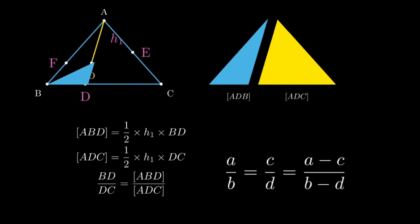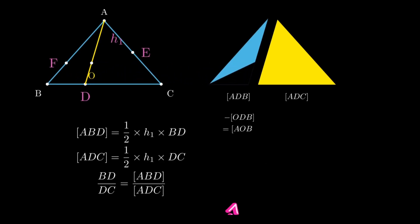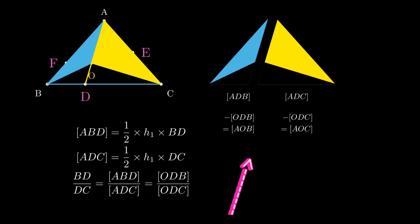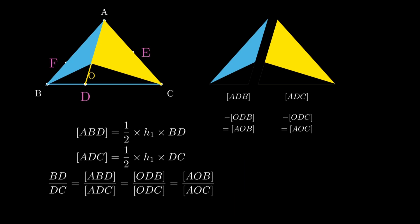If we use it, we will simply be able to subtract the ratios. ABD minus OBD and ADC minus ODC. That ratio is now equal to BD over DC. So what we get is AOB over AOC is equal to BD over DC.